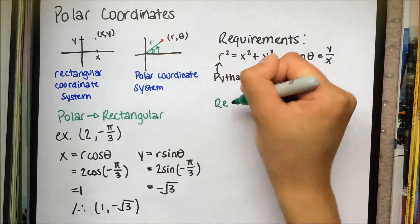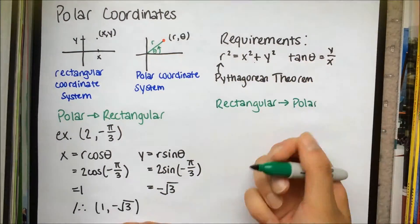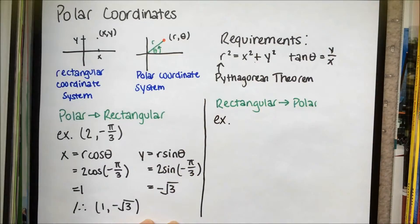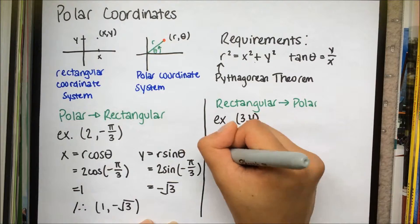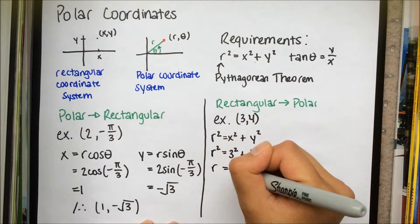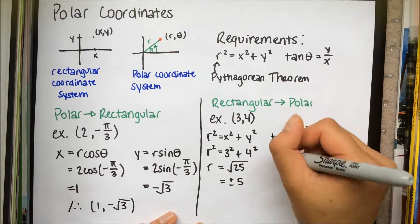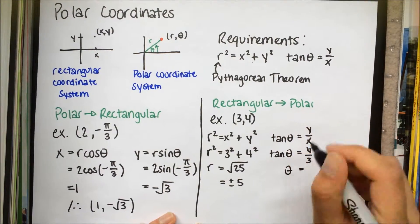We will now convert rectangular coordinates to polar coordinates. Let's find the polar coordinate representation of (3,4). By using the Pythagorean theorem, the value of r is positive or negative 5. Also, we can use the formula tan theta equals y over x to isolate for theta, which is equal to arctan 4 over 3.